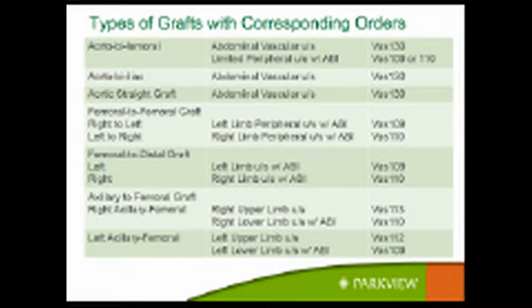These are the types of graphs with the corresponding orders for specific grafts. We enter all our recalls ourselves, which saves the physician and nursing staff from having to do that. For an aorto-femoral graft, we order an aorta and a limited ultrasound — order 109 or 110, left or right respectively. We check the aorta graft in the belly, the aorto-femoral ties into the femoral arteries in the groin, then check the outflow in the upper thigh to make sure there's no blockage. Blockage typically happens at an anastomosis — where the graft ties in — so we always check those.